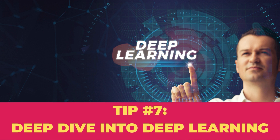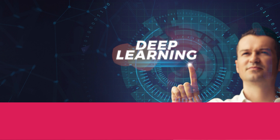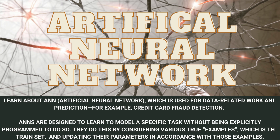Tip number seven: Deep dive into deep learning. Deep learning has gained significant popularity in recent years. Learn about ANN — Artificial Neural Networks — which are used for data-related work and prediction, for example credit card fraud detection. ANNs are designed to learn to model a specific task without being explicitly programmed, by considering training examples and updating their parameters accordingly.